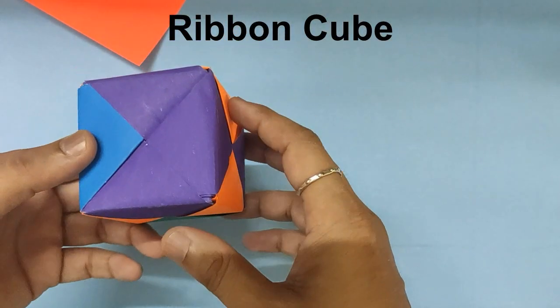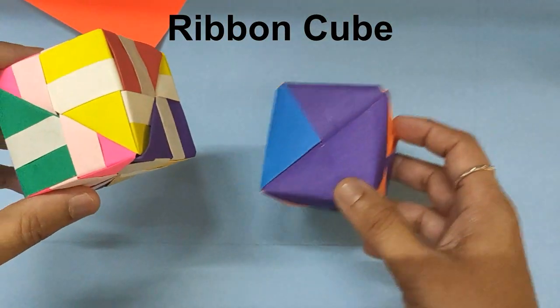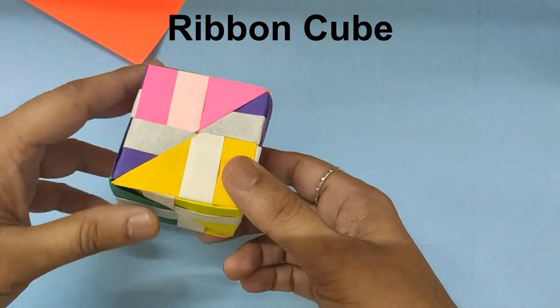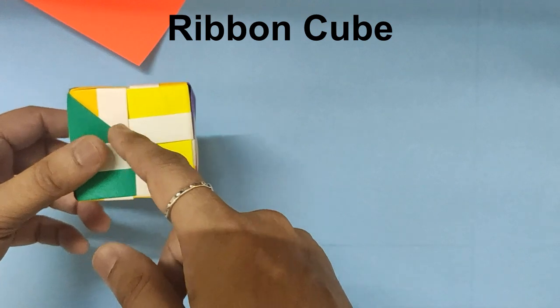The last time we had made a cube using six papers. This time we will make a cube which is called a ribbon cube, which has strips across the cube.